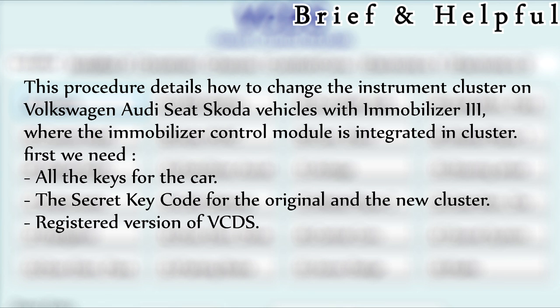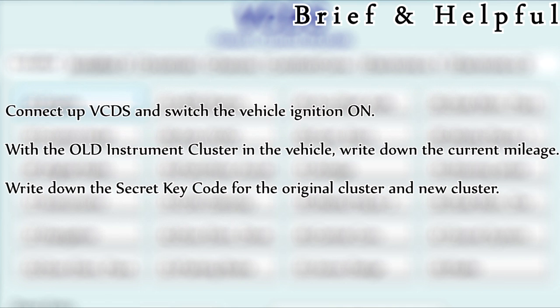First, we need all the keys for the car, the secret key code for the original cluster and the new cluster, and a registered version of VCDS. Connect up VCDS and switch the vehicle ignition on with the old instrument cluster in the vehicle. Write down the current mileage and write down the secret key code for the original cluster.